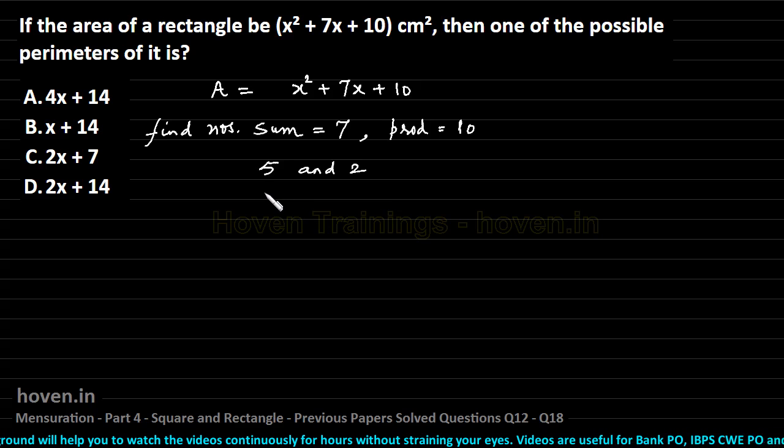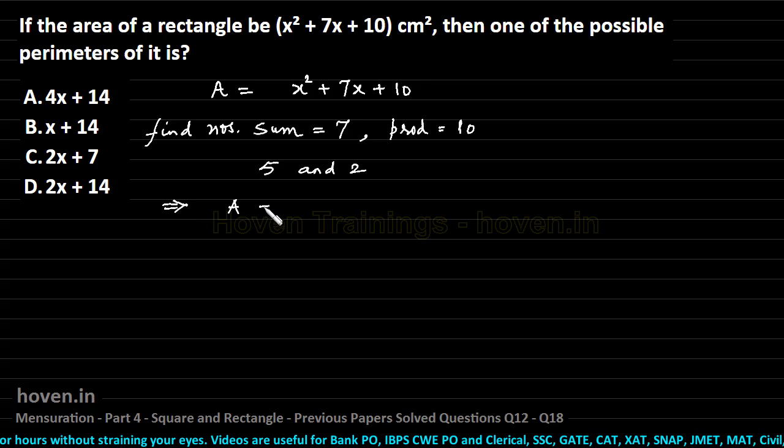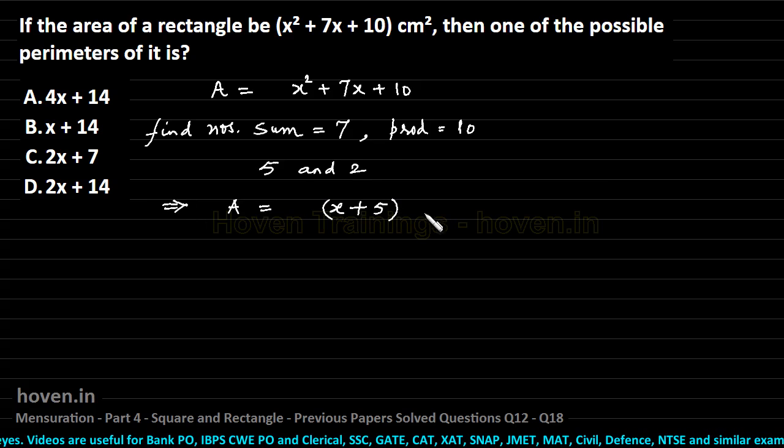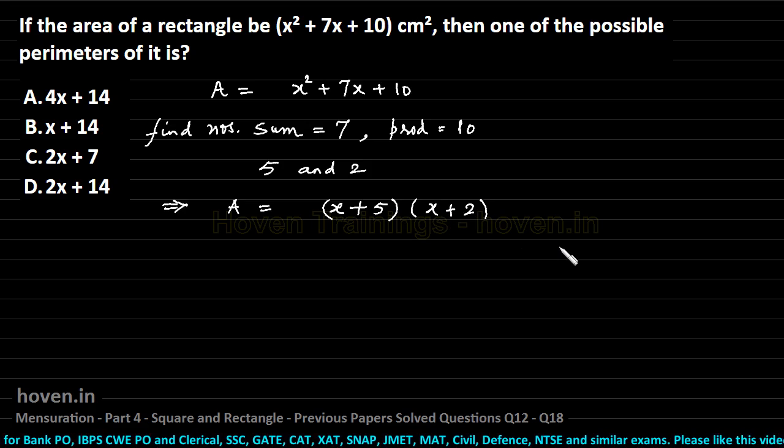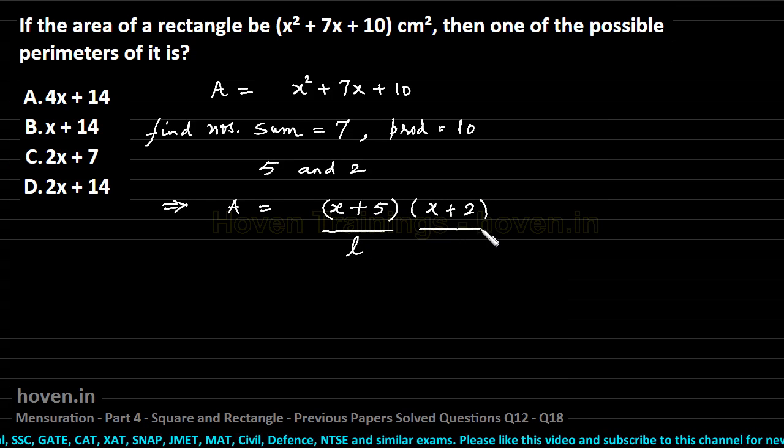Right now I am simply using the summary that the sum should be 7 and product should be 10. So we can write which implies area can be written as x plus 5 into x plus 2. Area is a product of two factors. We can now take that this factor will be the length and this factor will be the breadth.